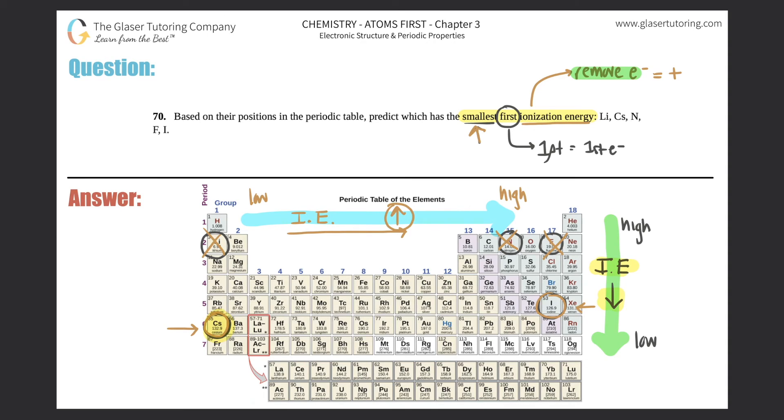So cesium is the correct answer. That just means it has the least amount of energy required to lose or remove an electron. That's all this is saying.